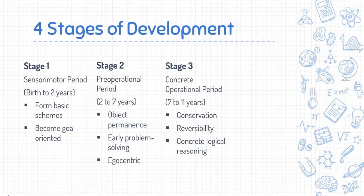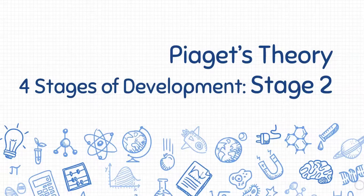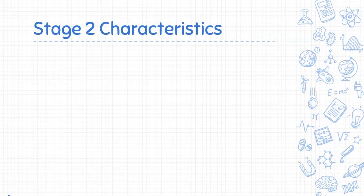The concrete operational period, during which understanding of conservation and concrete logical reasoning grows, as well as the ability to reverse thinking. And the formal operational period — in this final stage, the child graduates to abstract logical reasoning, is able to hypothesize, and develops concern for social issues. Our focus is on Stage 2, the pre-operational period, when a child begins to really interact with the world around them, from age two to seven.